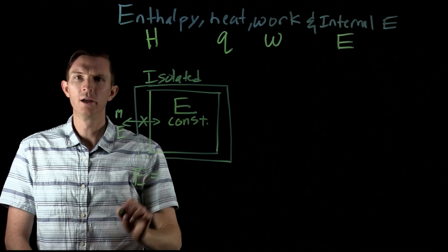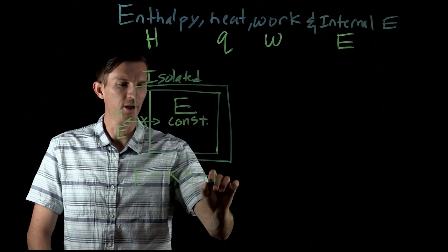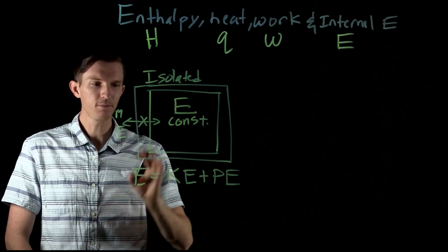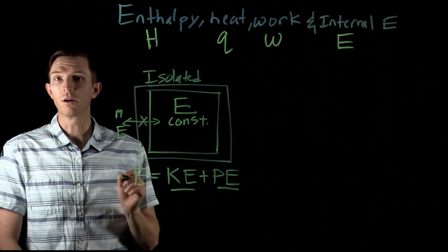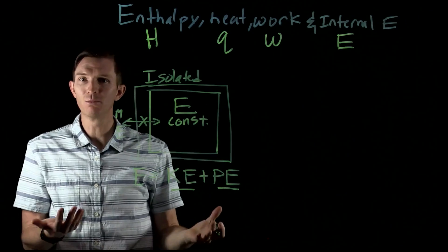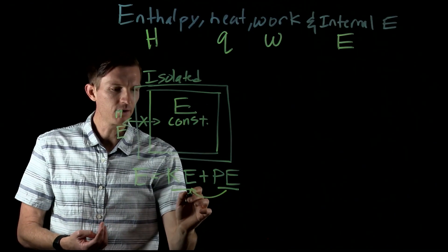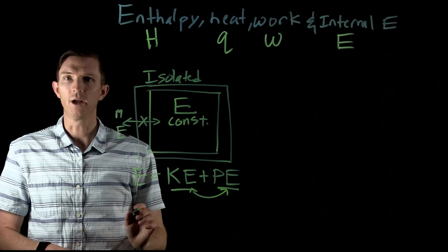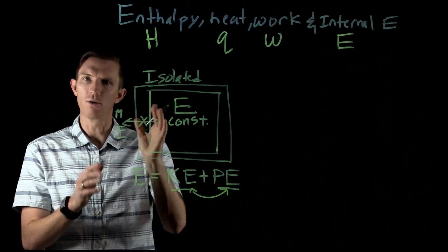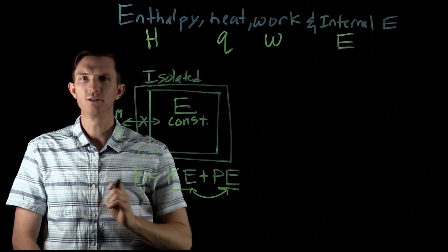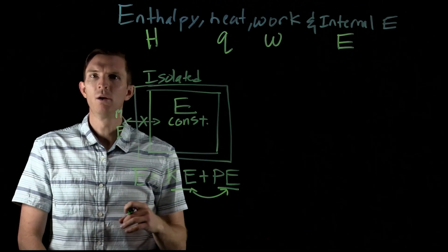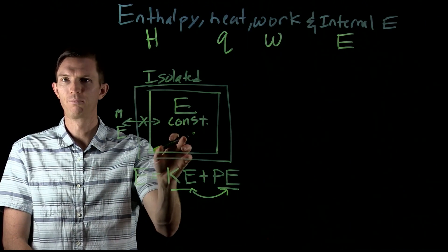Our internal energy includes the two broad forms of energy: kinetic and potential energy. This energy is constant. It doesn't mean that our kinetic and potential energies are constant though. Inside of here, we could increase the temperature — that temperature increase must come from the interconversion of potential energy to kinetic energy, and vice versa. In an isolated system it's separate; there's no way to let energy go across, outside or in, nor let matter go in and out. So there's going to be no heat that goes across this barrier.